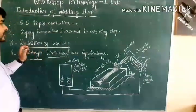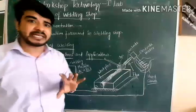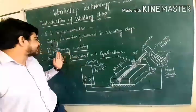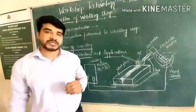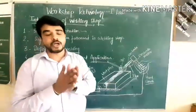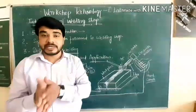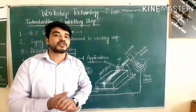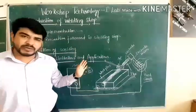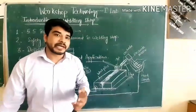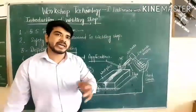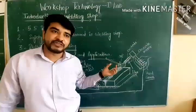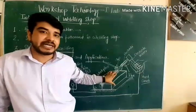Now we talk about the definition of welding. Welding is a permanent joining process in which two or more pieces of metal — similar or dissimilar type — are joined together by fusion, with or without the application of pressure, and with or without the use of filler material. The fusion is created by heat, which is generated from chemical reactions of gases, electric arc, or electric resistance.